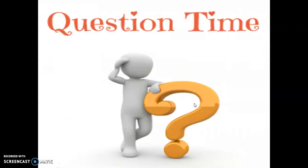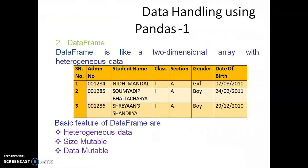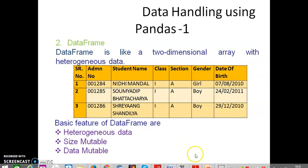We are here again for question time. We have discussed series questions, now it's time to discuss data frames. Data frame is a two-dimensional array with heterogeneous data, meaning different kinds of data at different places in a single structure. Size is mutable and data is mutable — we can change the size and the data.